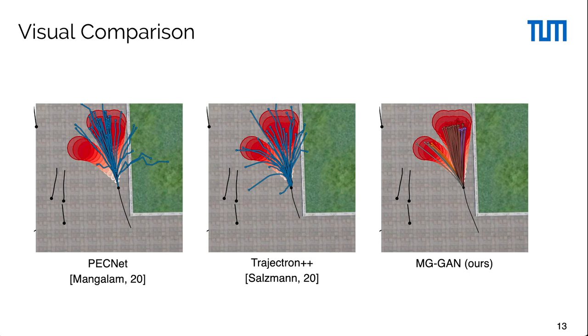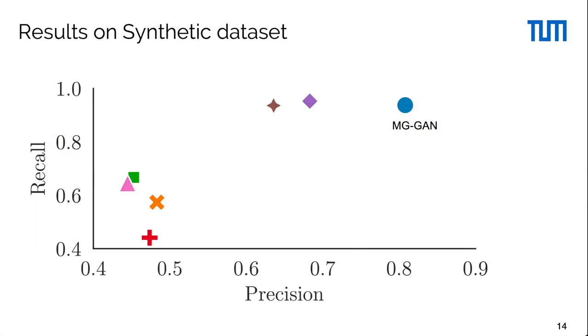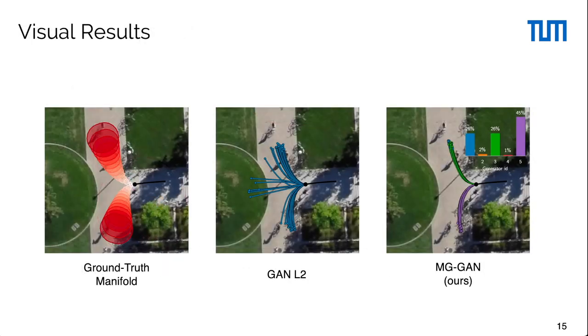In an additional experiment on our synthetic dataset, we compare our methods with single and multi-generator baselines as well as models with discrete latent space. We find that MG-GAN with our proposed path mode network outperforms single and multi-generator baselines on the recall and precision metric. We find that the GAN-L2 baseline produces many out-of-distribution samples while MG-GAN learns the ground truth distribution.